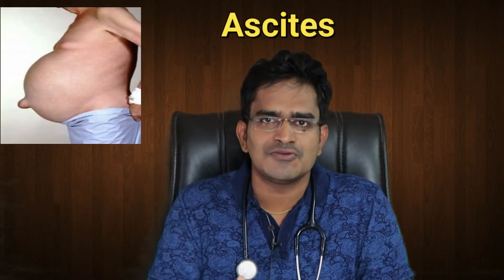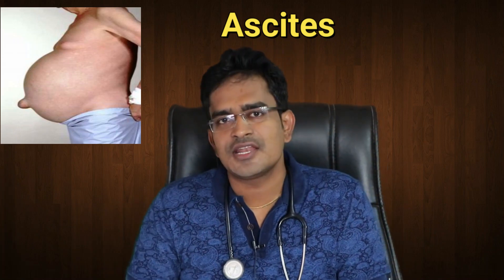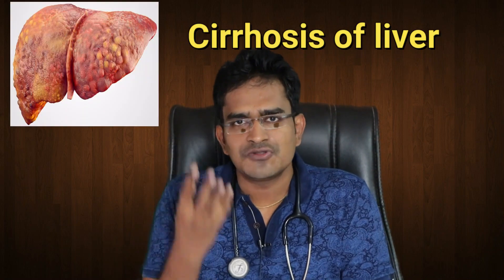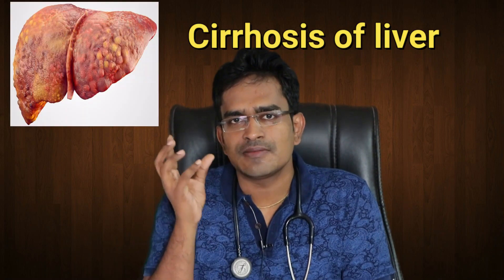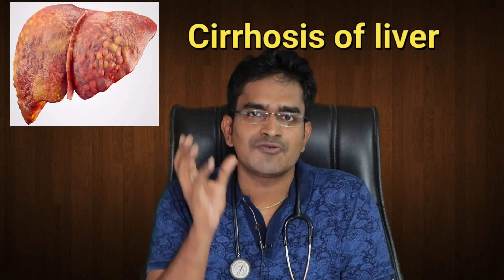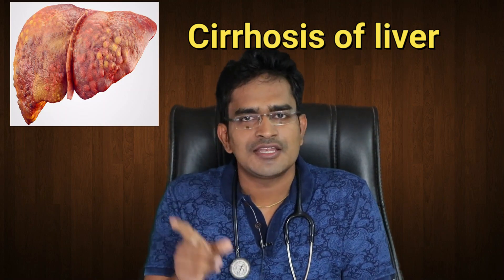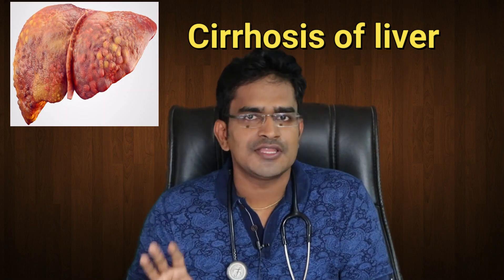If it accumulates as fluid, we call it ascites. The ascites are mostly caused by cirrhosis of the liver, along with ligaments, portal hypertension, hemorrhoids, and gut-related causes. That is the main cause of ascites.